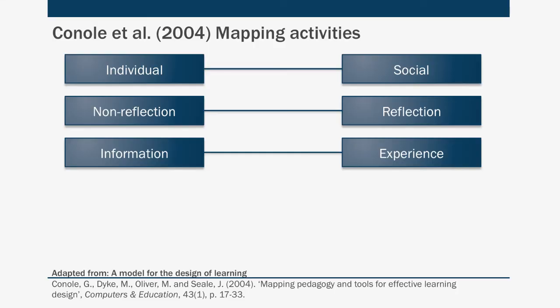What you can also do with these six modes of learning is put them onto axes, going from individual to social, non-reflection to reflection, and information to experience. Conole and colleagues presented this in a 3D axis and also as an octahedron, but I prefer to present this simply as three lines that you can map a learning activity onto.